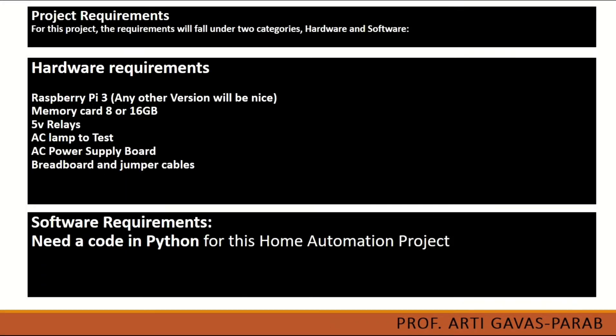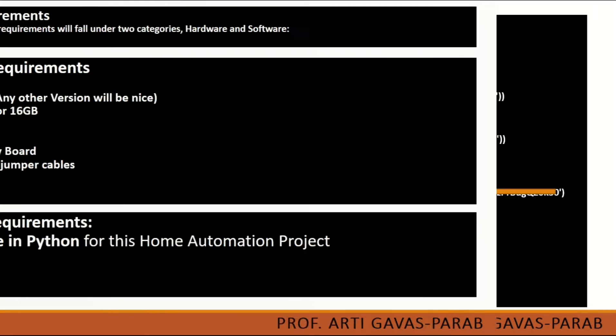Here are the project requirements in the form of hardware and software. For hardware we require a Raspberry Pi microcontroller, a memory card, 5-volt relays, an AC lamp, an AC power supply board, breadboard, and jumper wires.